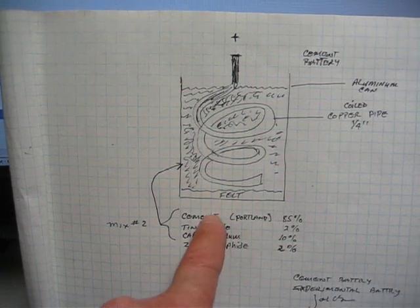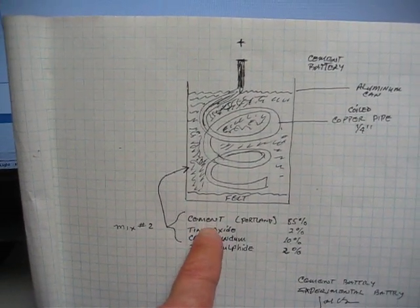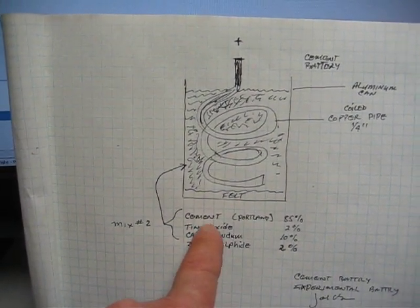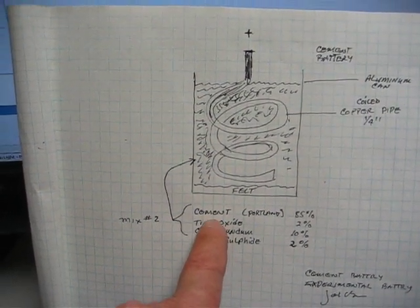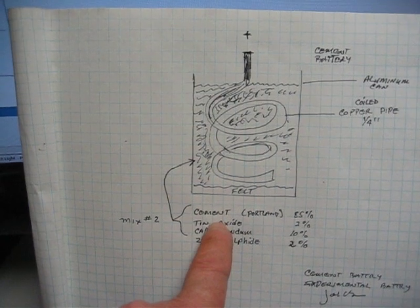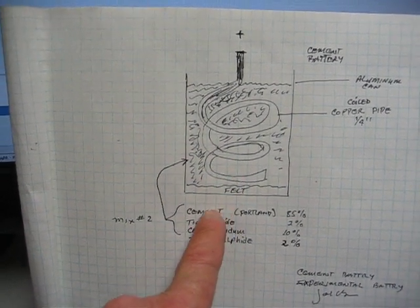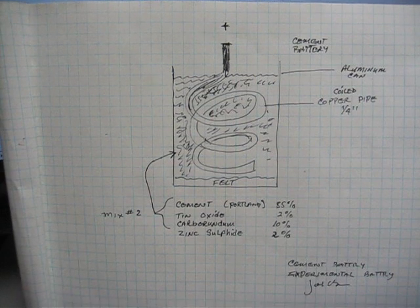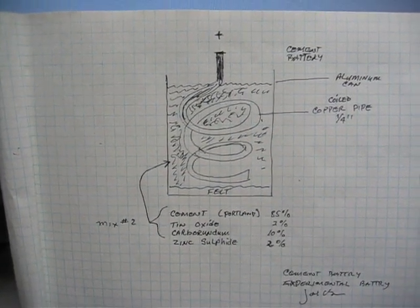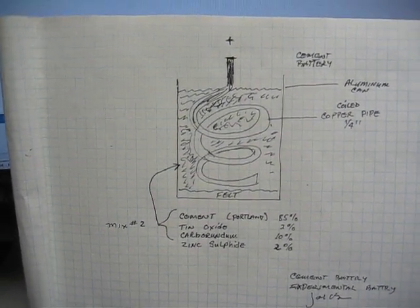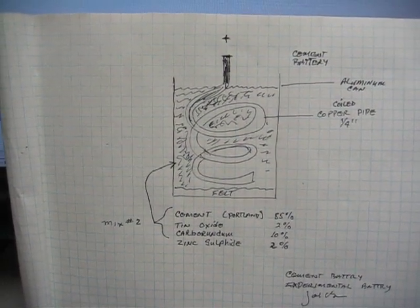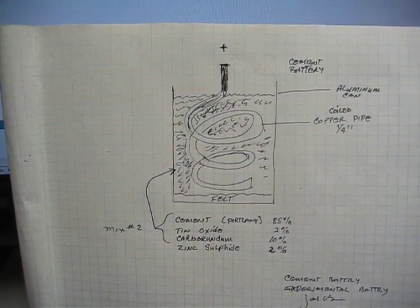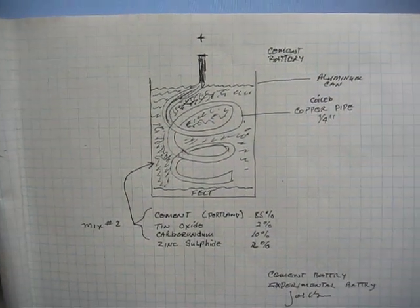But as soon as the right mixture is found, then you're going to have the same thing that John Hutchinson had and Marcus Reed had, and probably a little bit better than that because you're going to have all the information. We're not going to keep this information from anybody because if you do these right, I would think that you could generate a lot of power with them. Small levels first, but bigger levels later.